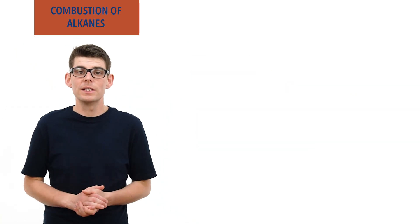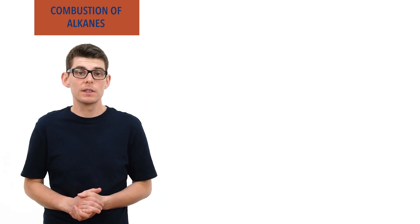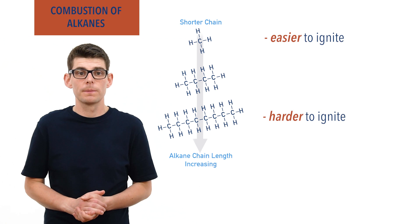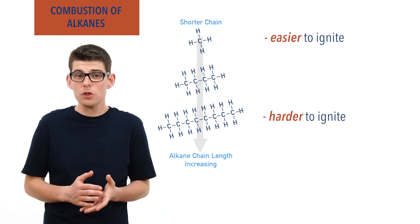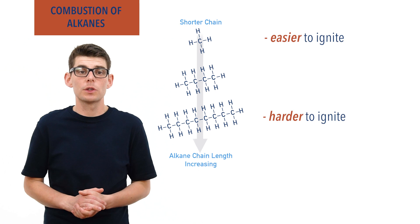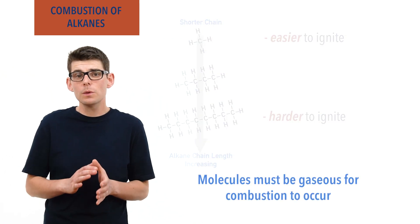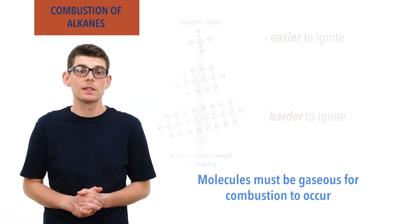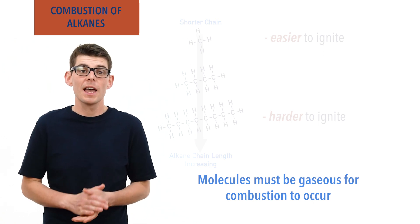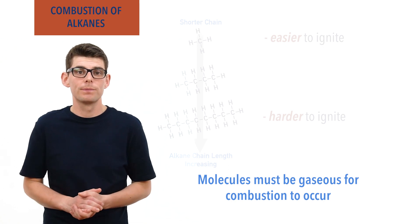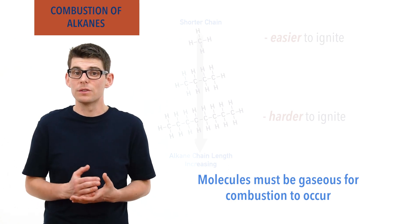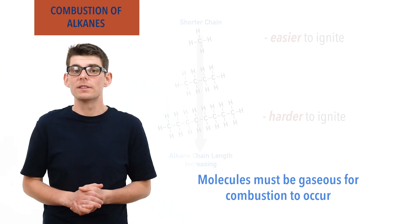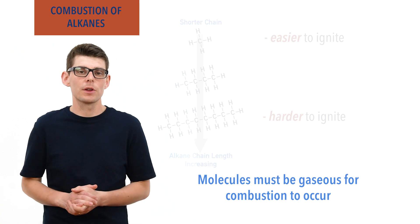Longer chain alkanes need to be given high amounts of energy to start combusting and are harder to ignite than shorter chain hydrocarbons. The reason is because for combustion to occur, alkane molecules must be gaseous. Even if the fuel itself is liquid or solid, the alkane molecules in the fuel have to be gaseous in order to react with oxygen and for combustion to happen. As longer chain hydrocarbons are harder to vaporize and turn into a gas than shorter chain hydrocarbons, more energy is needed to kick-start the combustion of them.